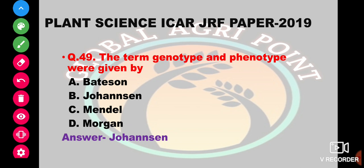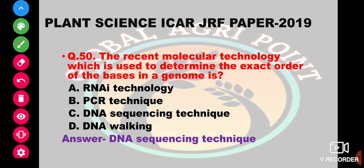The recent molecular technology used to determine the exact order of bases in the genome is RNA antisense technology, PCR technique, DNA sequencing technique, or DNA walking technique. The answer is DNA sequencing technique.